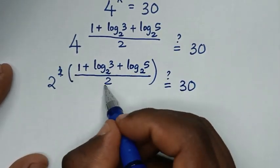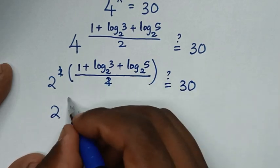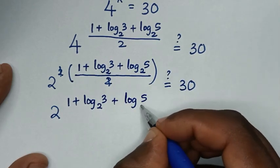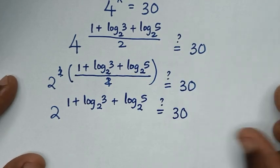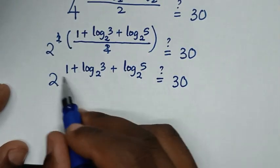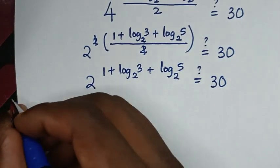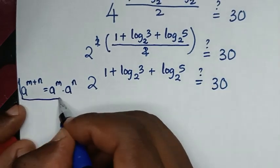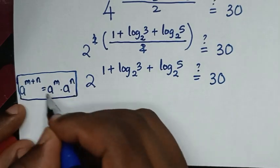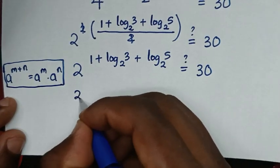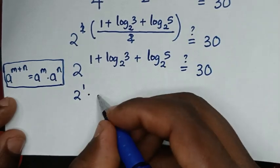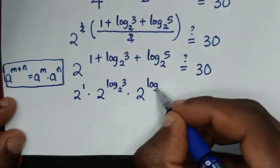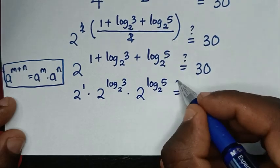The 2 in the exponent's denominator cancels with the 2 from the square, giving 2 to the power of (1 + log₂3 + log₂5). Using the rule a^(m+n) = a^m · a^n, this becomes 2 to the power of 1, times 2 to the power of log₂3, times 2 to the power of log₂5. We ask: is this equal to 30?